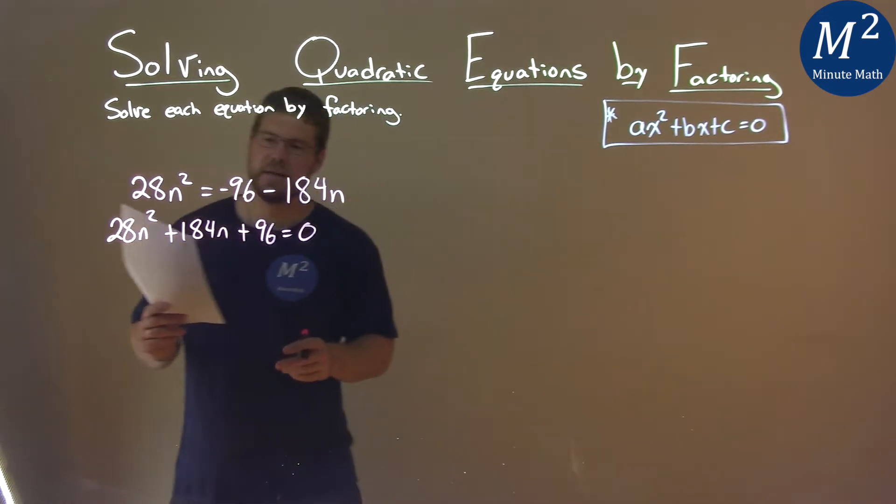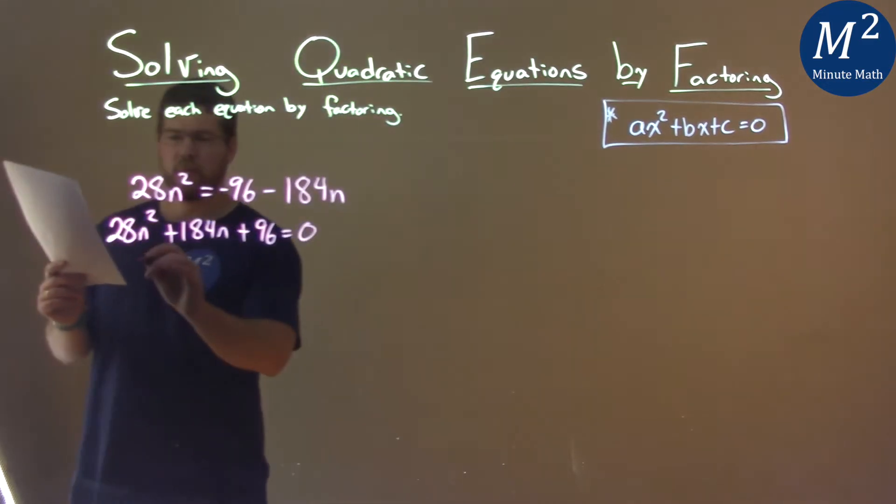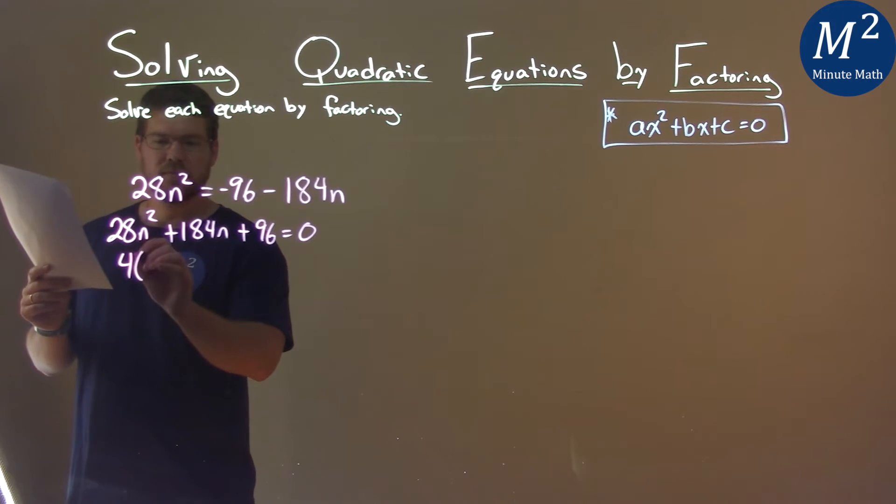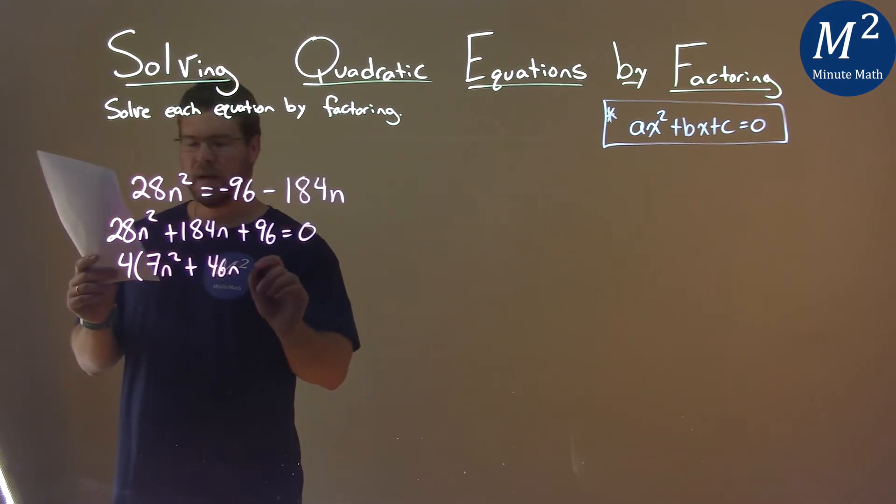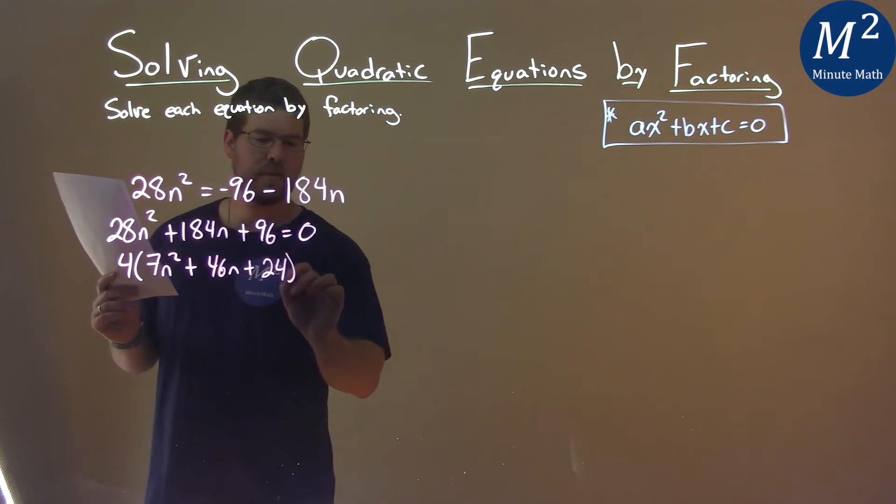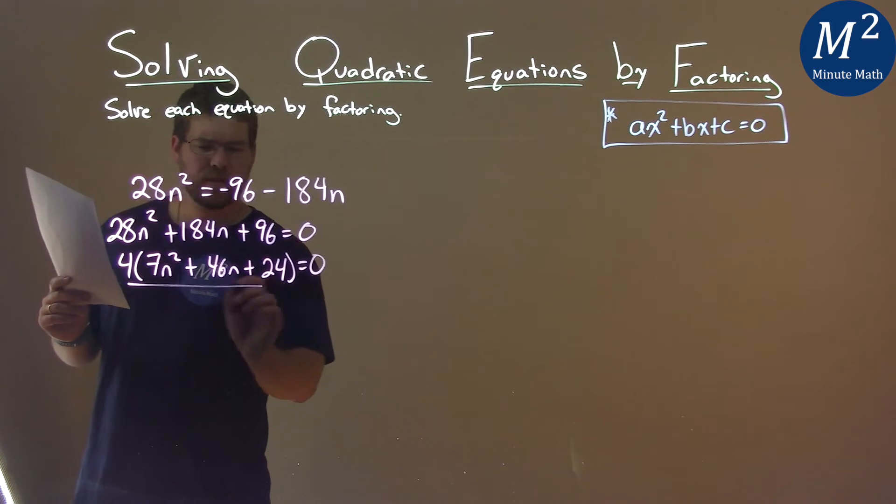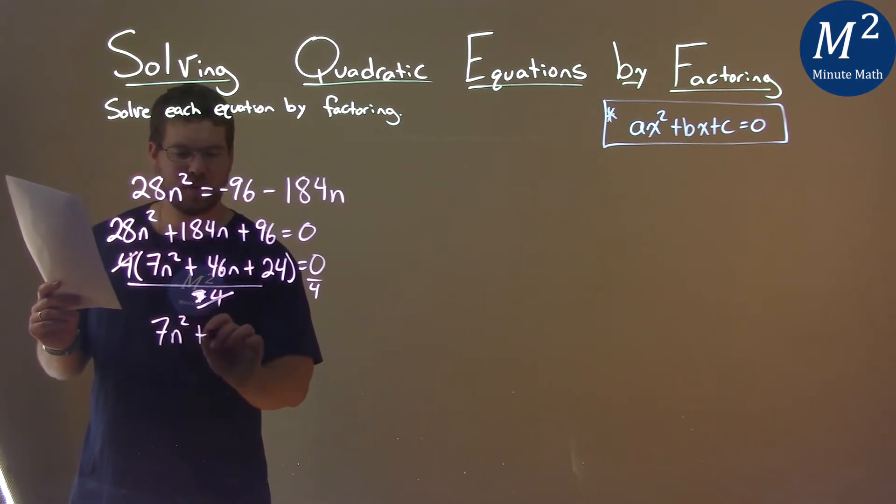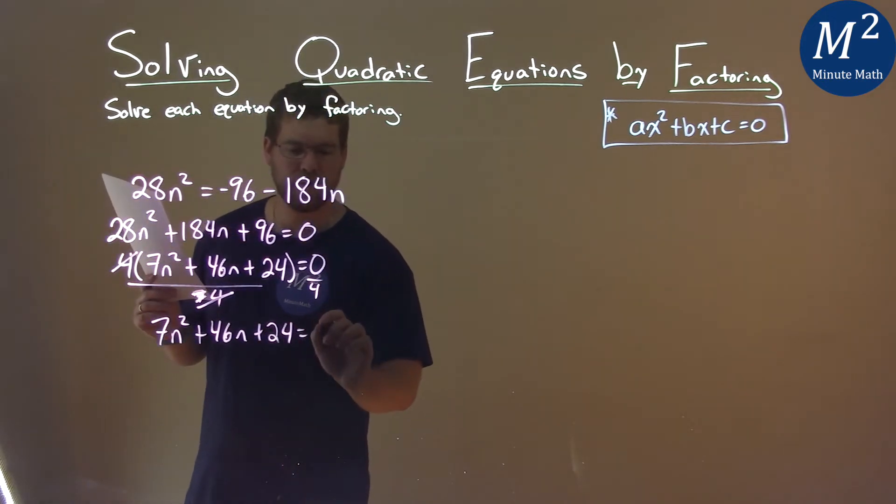So it's not too bad, but I want to simplify this a little first. Four goes into each part here. So we pull out a four, we have 7n squared, then we have 46n, pull out a four there, and then a 24, and that's equal to zero. Well, don't need the four there, so if I divide both sides by four, that cancels, and we're left with 7n squared plus 46n plus 24 equals zero.